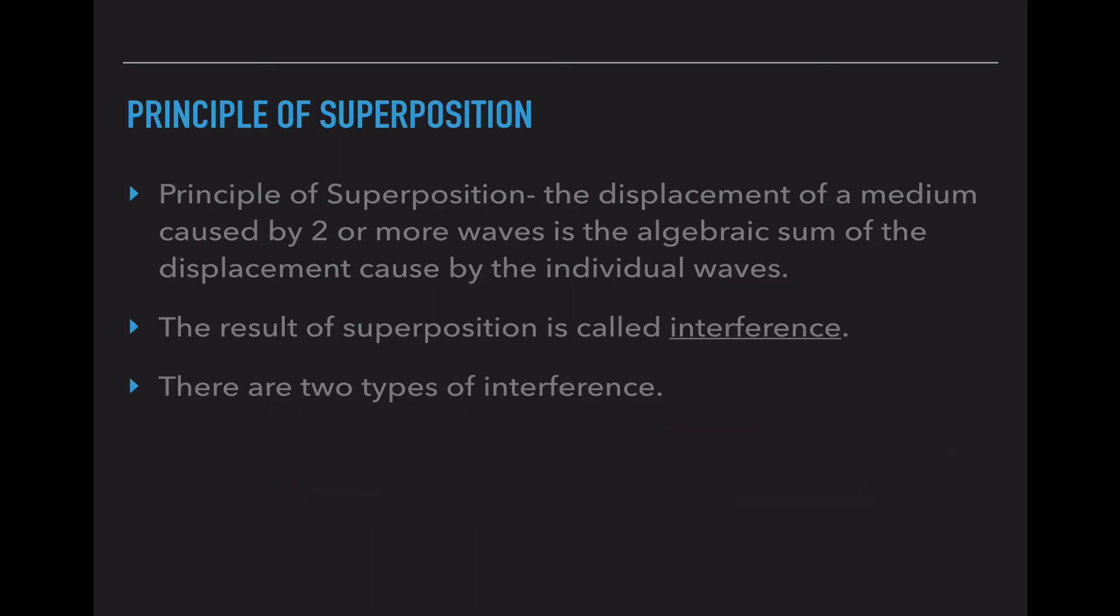What we're going to talk about is the principle of superposition. This is the displacement of a medium caused by two or more waves being the algebraic sum of the displacement caused by the individual waves. In real people words, when two waves interact you're either going to add or subtract their crests and troughs in order to create a new wave. This is called interference and there are two types of interference.